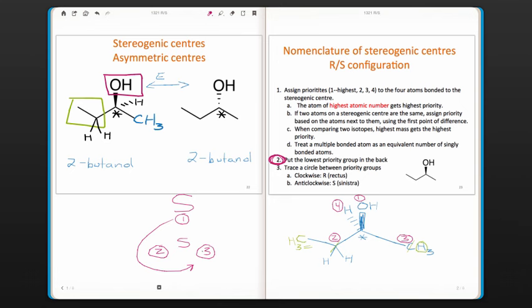If the groups have been oriented in the other way, one, two, and three, and so the arrow would be going clockwise, that would be the R configuration.